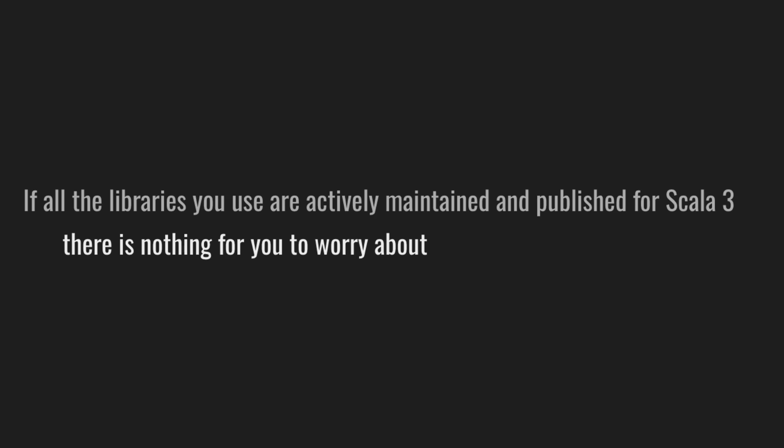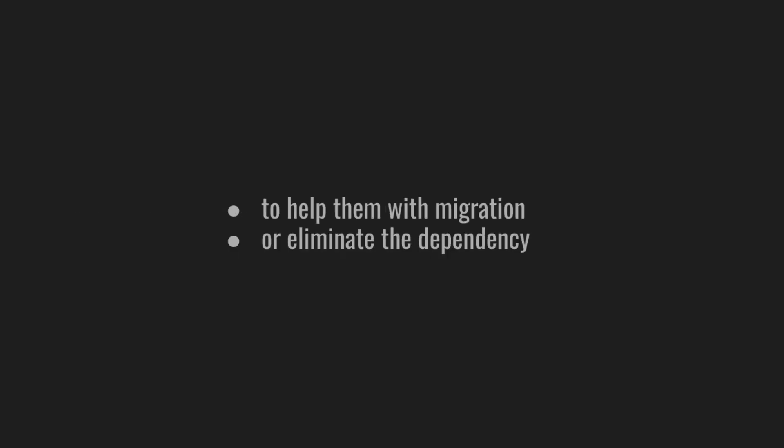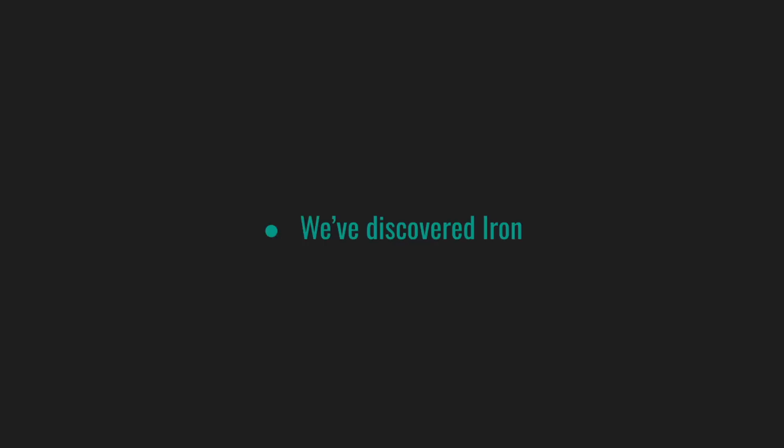Dealing with dependencies: if all the libraries you use are actively maintained and published for Scala 3, there's nothing to worry about. Otherwise, you may need to help them with migration or eliminate the dependency. Some libraries can be redundant on Scala 3 because, for instance, Scala 3 has native support for type class derivation. And some libraries just have new alternatives. For example, at this stage we discovered IRON, a great lightweight library for type constraints, which replaced both refined and new-type libraries in one go.